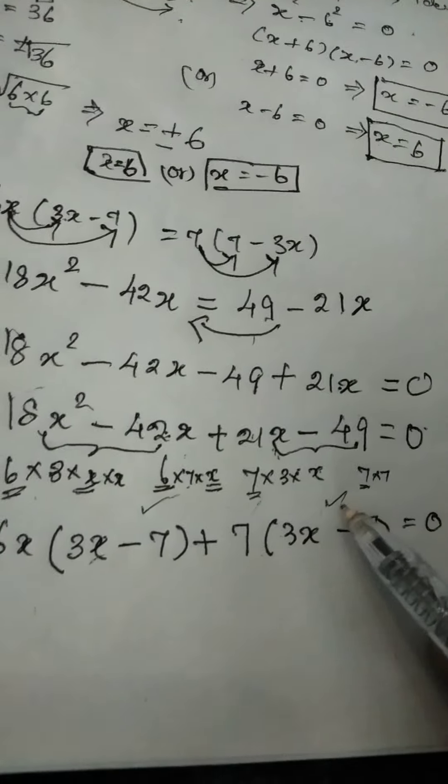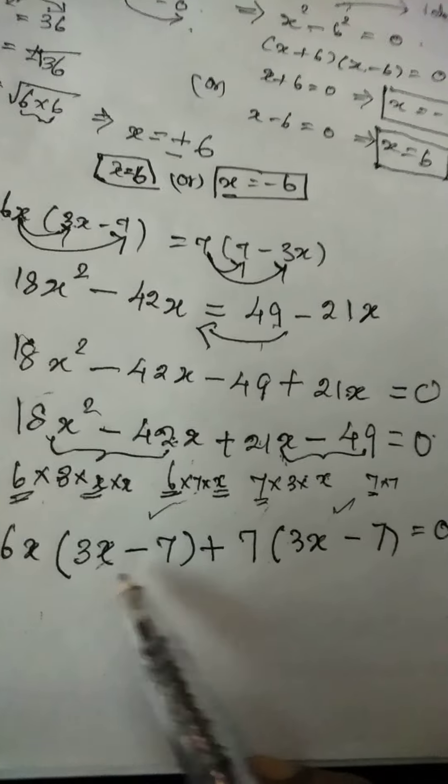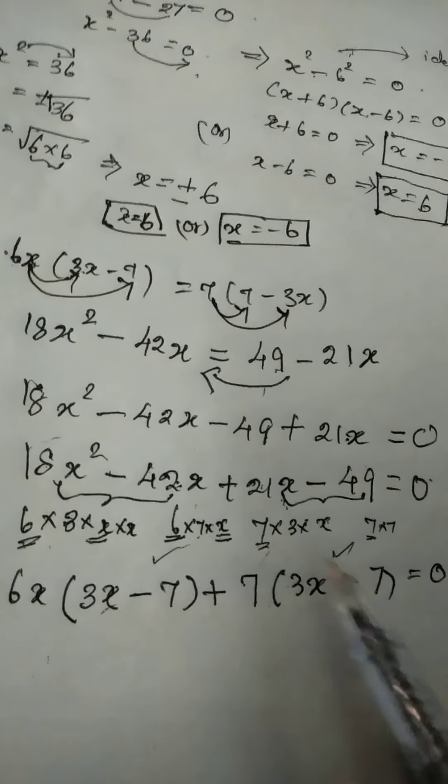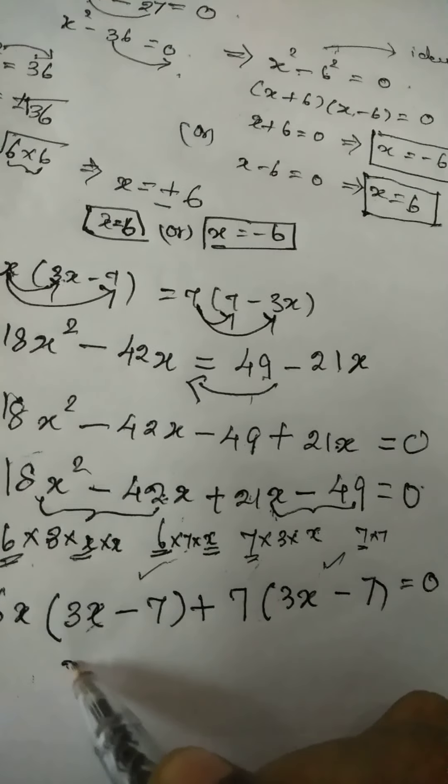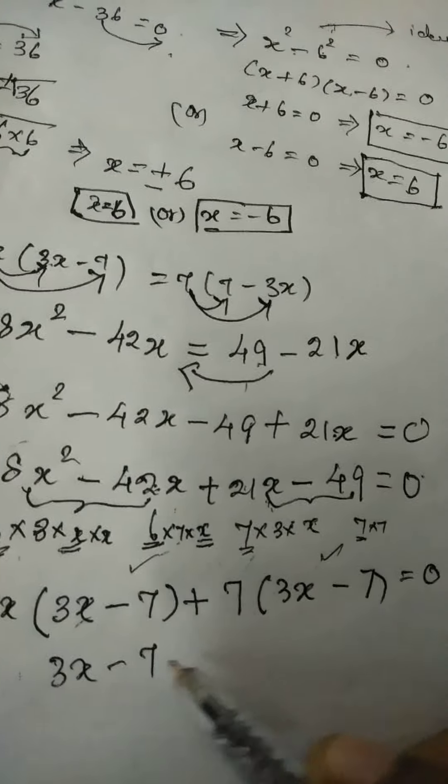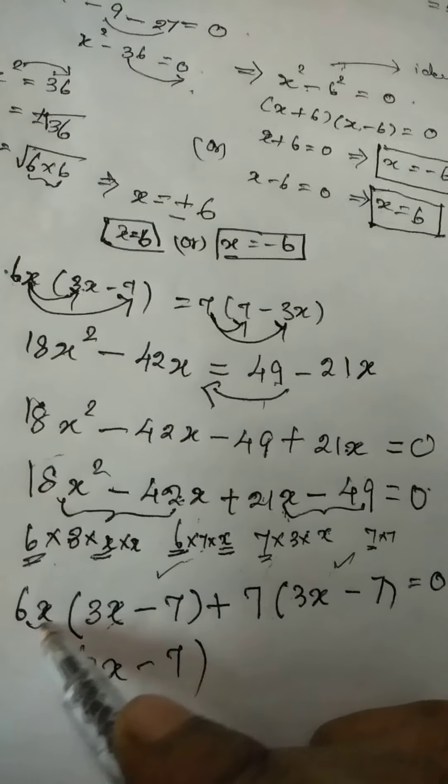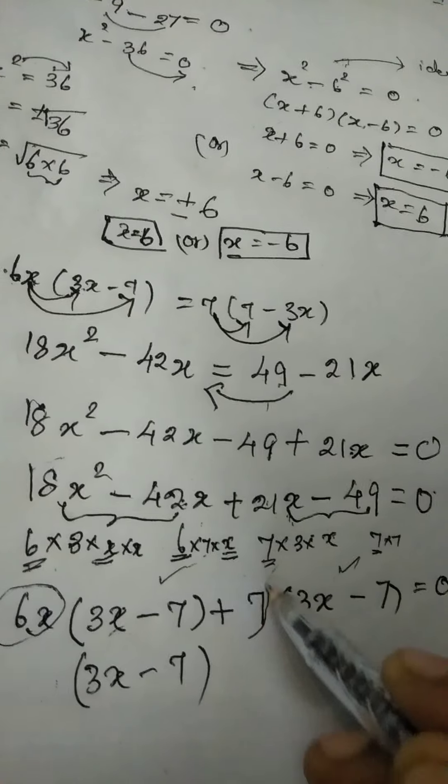So now just look at here what is next what is common we have 3x minus 7 and 3x minus 7. In the first term also we have 3x minus 7. Second term also we have 3x minus 7.